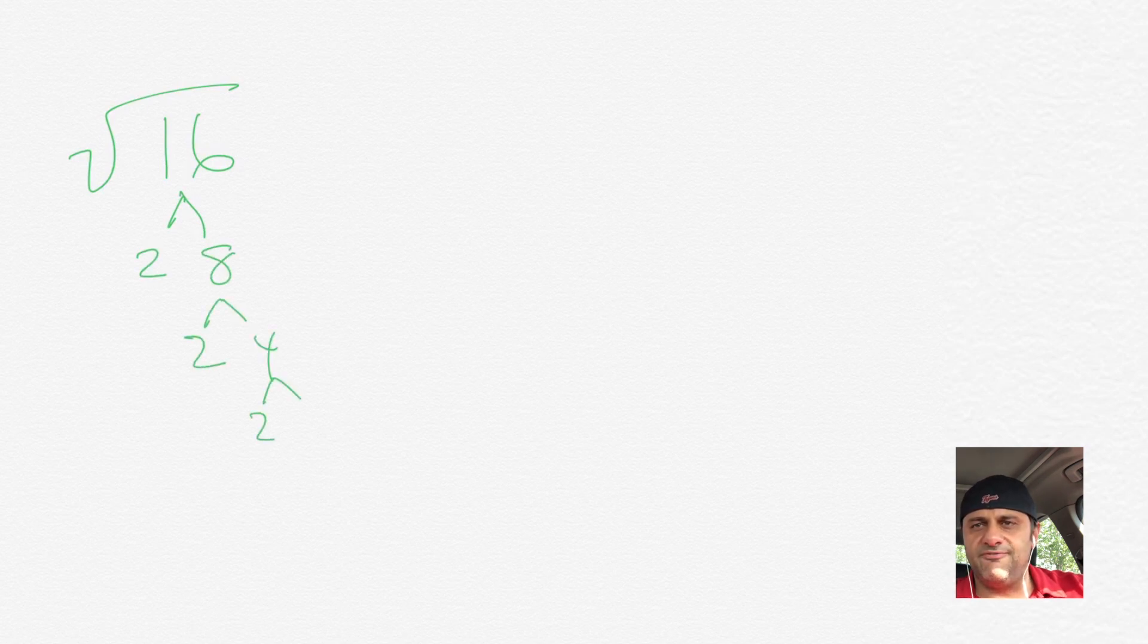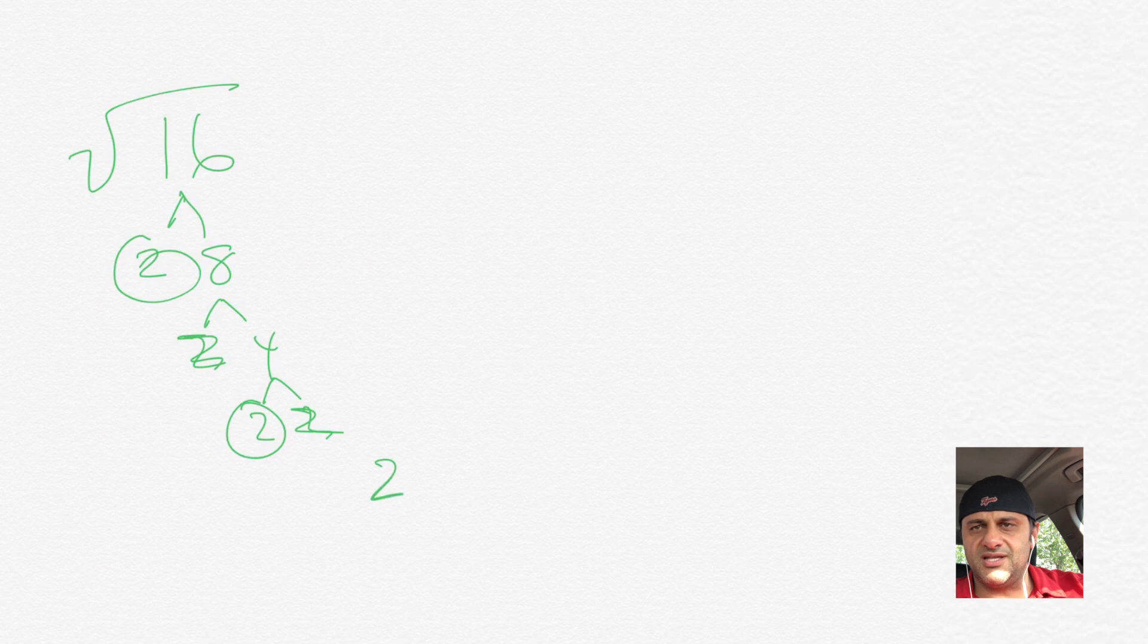And as you can see here, you have 4 2s. And then, so there's 2 pairs of 2s. And then those come out. There's nothing left. And then that's just 2 times 2, because we had 2 pairs, which is 4.